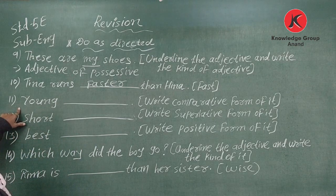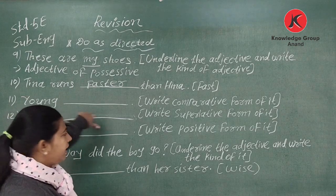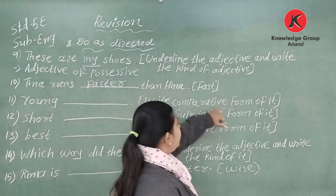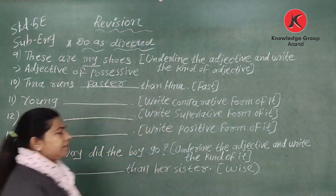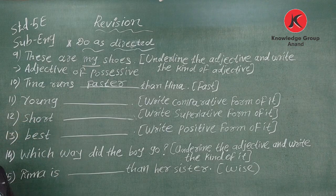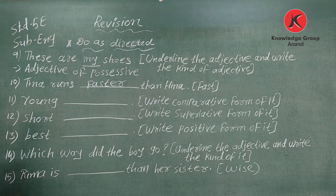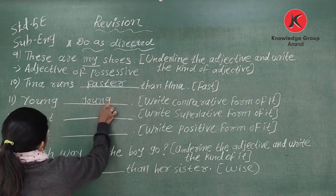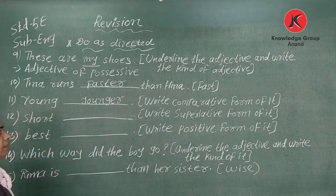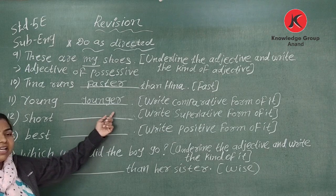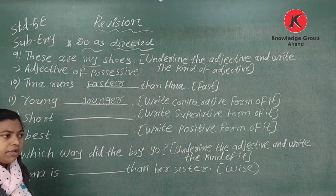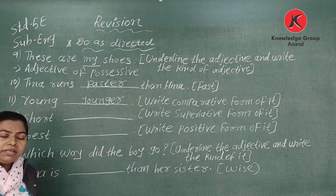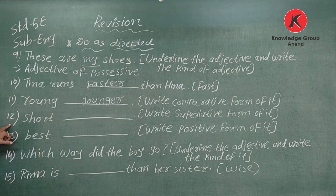Number eleven: 'Young' — comparative form. Young is not in comparative degree, so young comparative form is 'younger' — Y-O-U-N-G-E-R. For comparative degree we add E-R; for superlative form we add E-S-T.